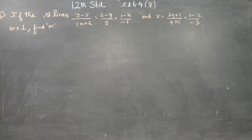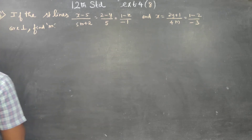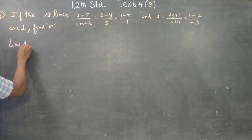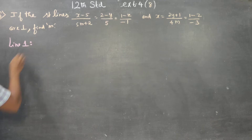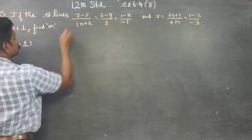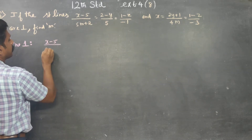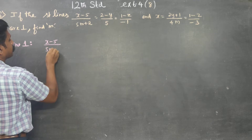Dear 12th standard students, in exercise number 6.4, sum number 8, if the given lines are perpendicular, find the value of m. I am going to start by line number 1. My line 1 is x minus 5 by 5m plus 2.